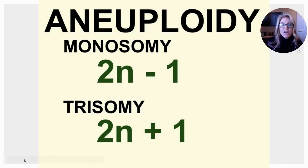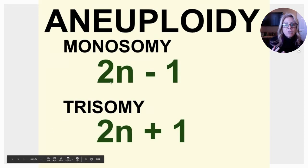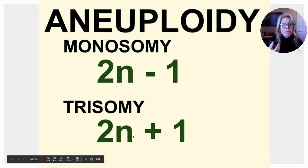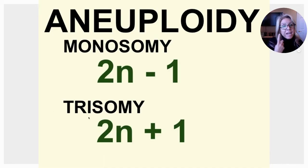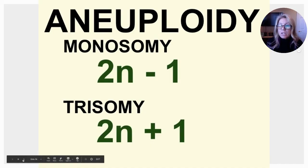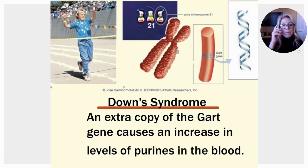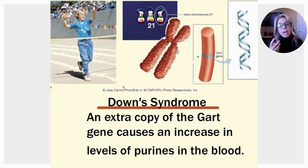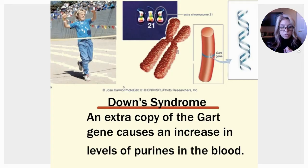Now let's talk about aneuploidy. A monosomy means your diploid number of 46 minus one — for one of your homologous pairs you only received one chromosome. A trisomy would be 2N plus one, so 46 plus one equals 47 — you have an extra chromosome, as seen in Down syndrome, which is trisomy 21. Research has shown that the extra copy of the GART gene is key; individuals who have trisomy 21 but lack this extra GART gene copy do not show the typical symptoms of Down syndrome.